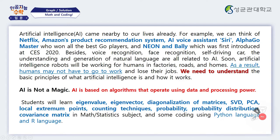Soon, artificial intelligence will be working for humans in factories, laws, and homes. As a result, humans may not have to go to work and could lose their jobs. We need to understand the basic principles of what artificial intelligence is and how it works. We should understand that artificial intelligence is not magic — AI is based on algorithms that operate using data and processing power.